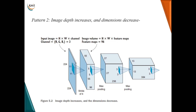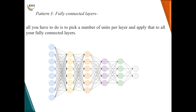The second design choice to consider is that image depth increases and dimensions decrease. As we move from input to output, the spatial dimension is decreasing while the depth of the image is increasing — that is, the image is shrinking in size. The third design choice is the fully connected layers: we pick a number of units per layer and apply that to all the fully connected layers.